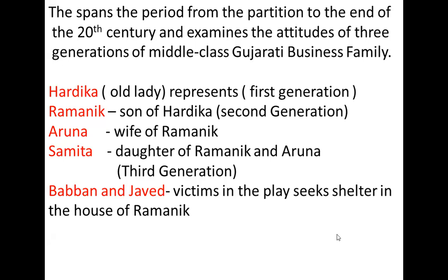The first and old-age character is Harvika, who represents the first generation. Harvika's earlier name is Daksha, and she gets married with a person called Hari. In order to match her name with his, her in-laws — Hari's parents — change Daksha's name and keep it as Harvika. Their surname is Gandhi, but they have no relations with or are not relatives of Mahatma Gandhi.